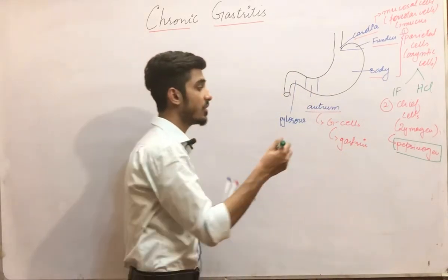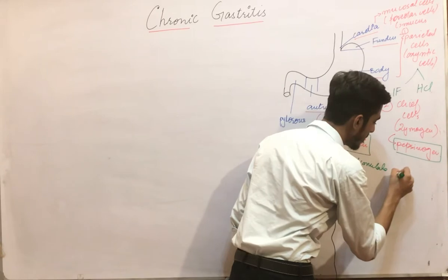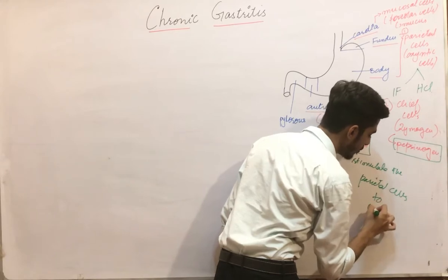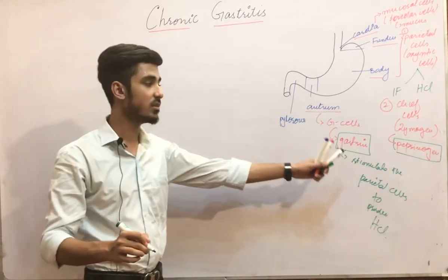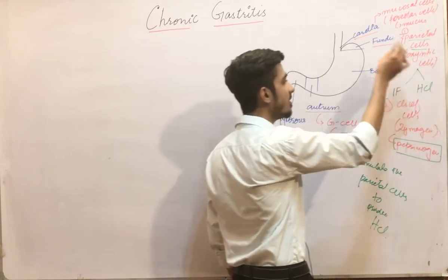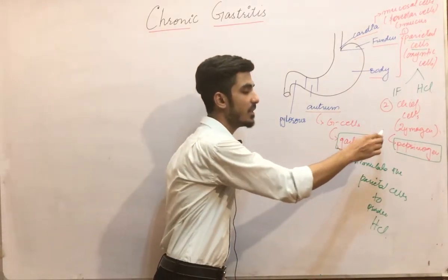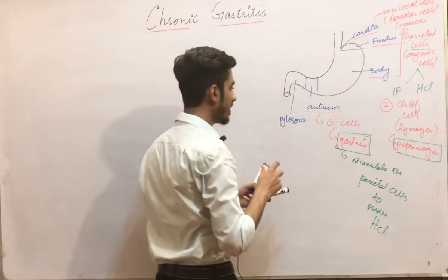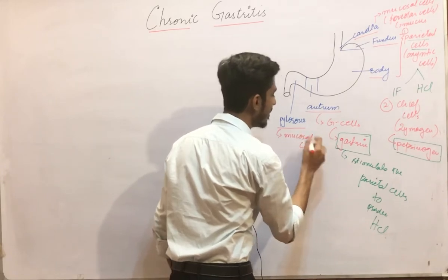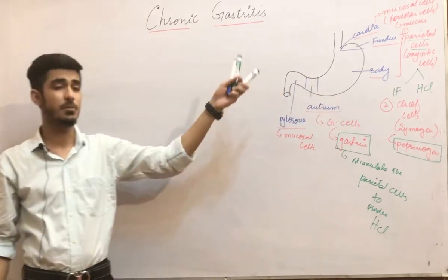It is very important to understand the function of gastrin. Basically, gastrin stimulates the parietal cells to produce HCl. This gastrin is a hormone that moves towards the body and fundus where it stimulates the parietal cells, causing increased HCl production. The last part, the pylorus, also contains similar mucosal cells as found in the cardiac region. This is the normal physiology of the stomach.